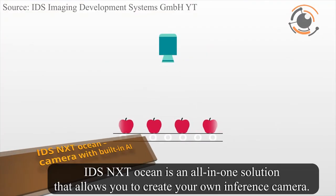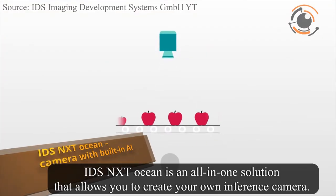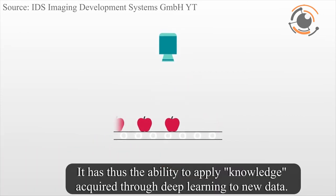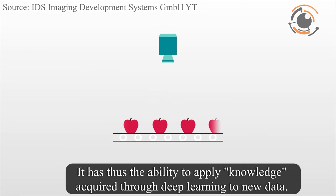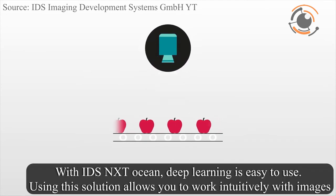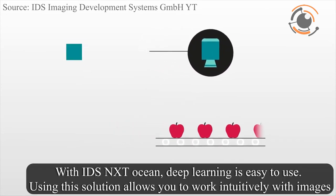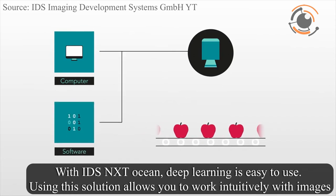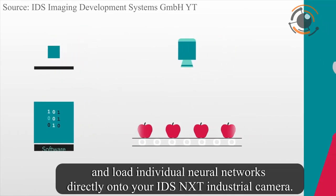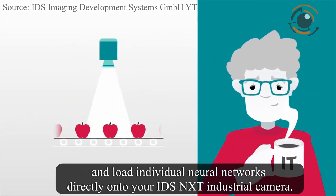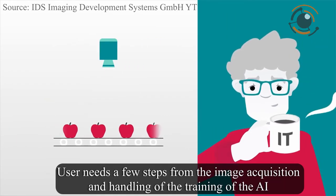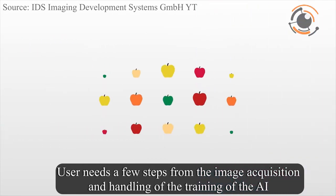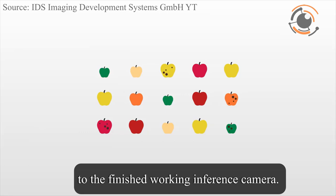IDS NXT Ocean is an all-in-one solution that allows you to create your own inference camera. It has the ability to apply knowledge acquired through deep learning to new data. With IDS NXT Ocean, deep learning is easy to use. Using this solution allows you to work intuitively with images and load individual neural networks directly onto your IDS NXT industrial camera. Users need only a few steps from image acquisition and handling of the AI training to the finished working inference camera.